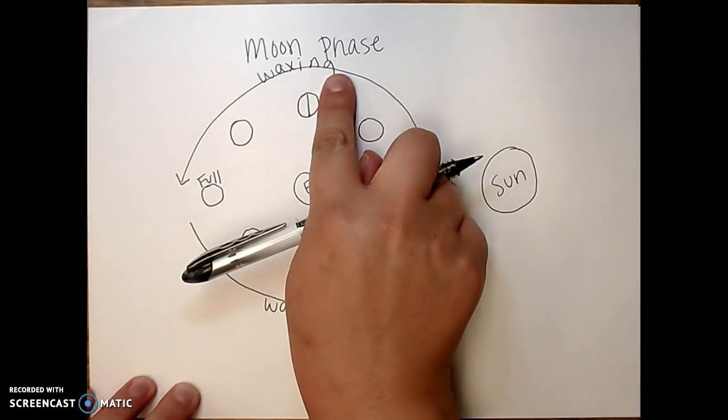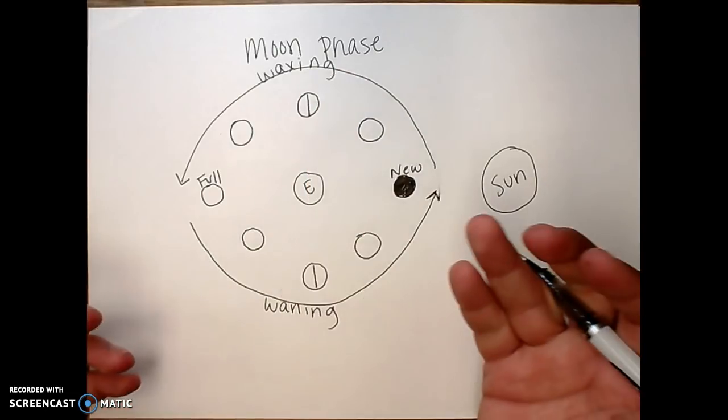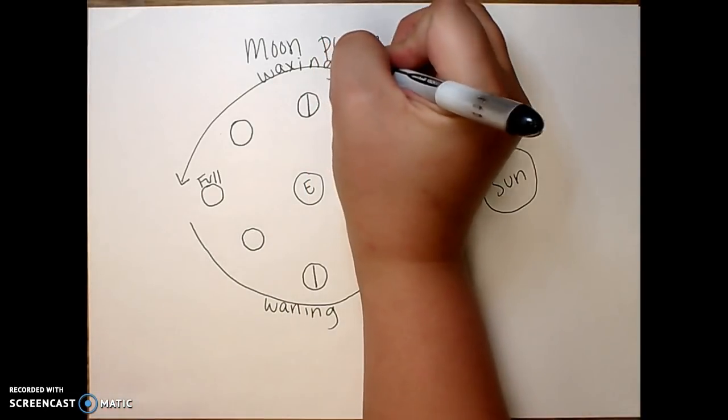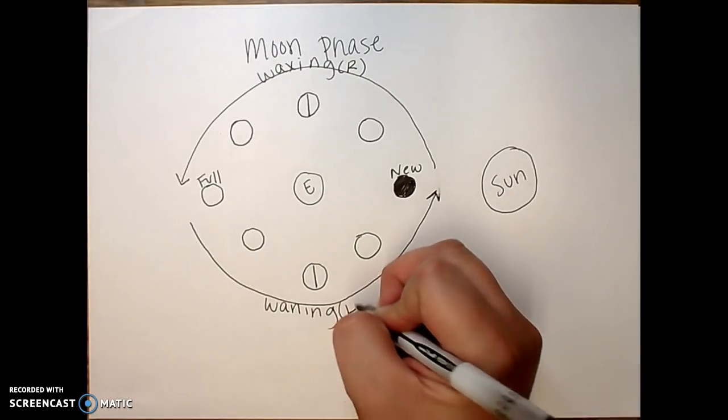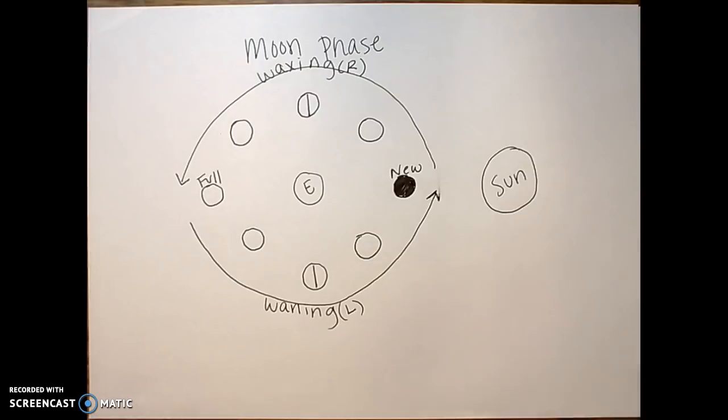Now whenever I'm waxing, I need to remember that the lit up side is always going to be on the right side. Whenever I'm waning, I need to remember that the light is always going to be on the left side. So let me go ahead and draw my quarters.